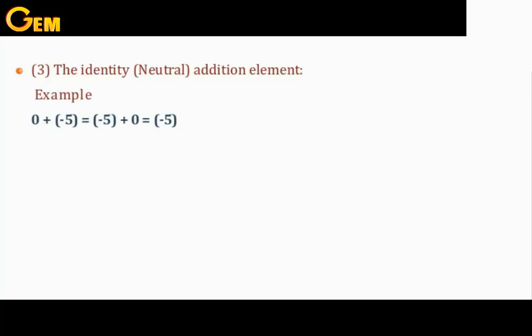Number 3: The identity or neutral element property. For example, 0 plus negative 5 equals negative 5 plus 0 equals negative 5. And 9 plus 0 equals 0 plus 9 equals 9. The number 0 is the identity or neutral element of addition.